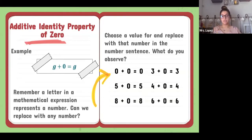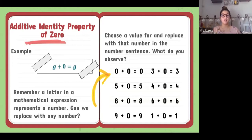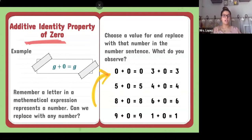And one plus zero is one. The additive identity property of zero means that when you have a number and you add zero to it, you get the same number you started with. If I gave you five dollars and I'm not giving you any more money, you still have five dollars. So write down this equation on your paper and next to it write: additive identity property of zero — any number added to zero equals itself.